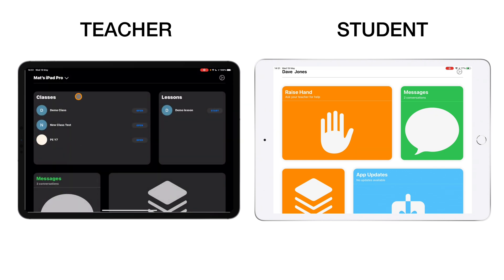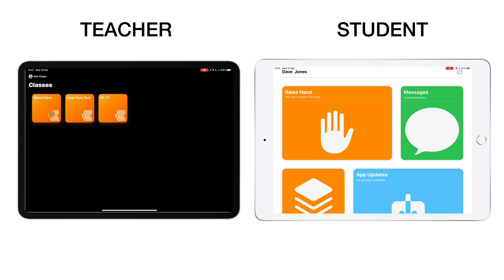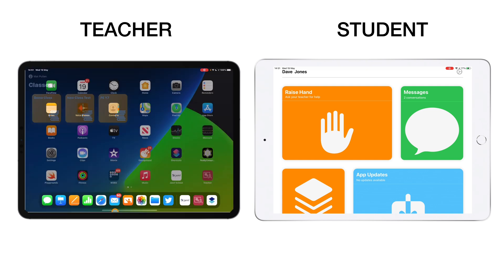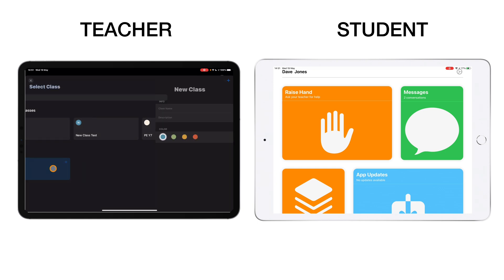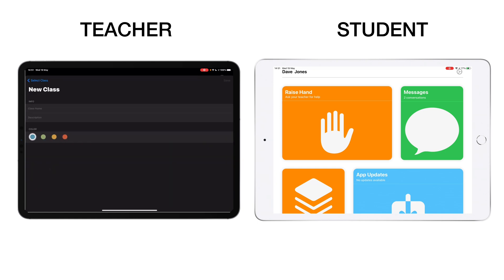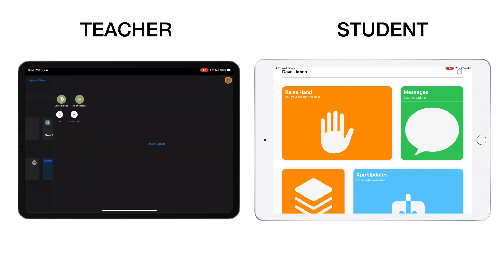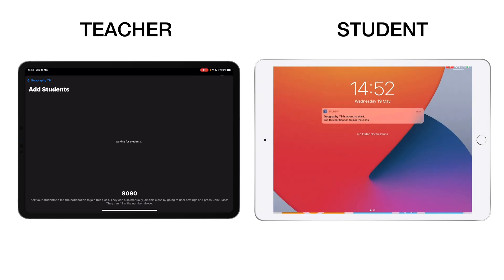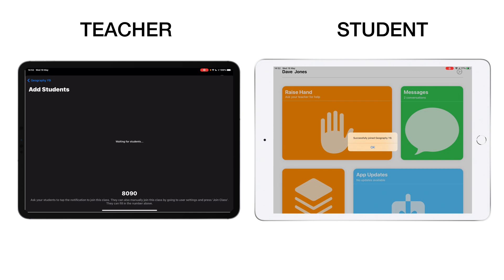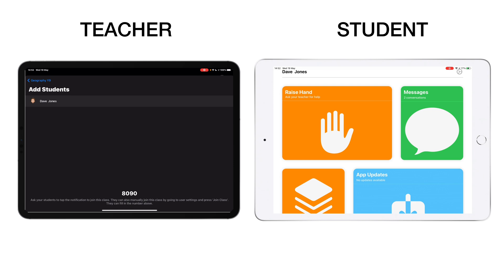Let's jump into the classes section. These classes marry up with my Apple Classroom classes, so it ties in directly to how you're already running things. I can jump into existing classes or start a new class — the same process as creating one in Apple Classroom or the Jamf portal. Give your class a name, description, and color, then tap save. I'll create a geography class for my Year 9 students, make it green, and tap save.